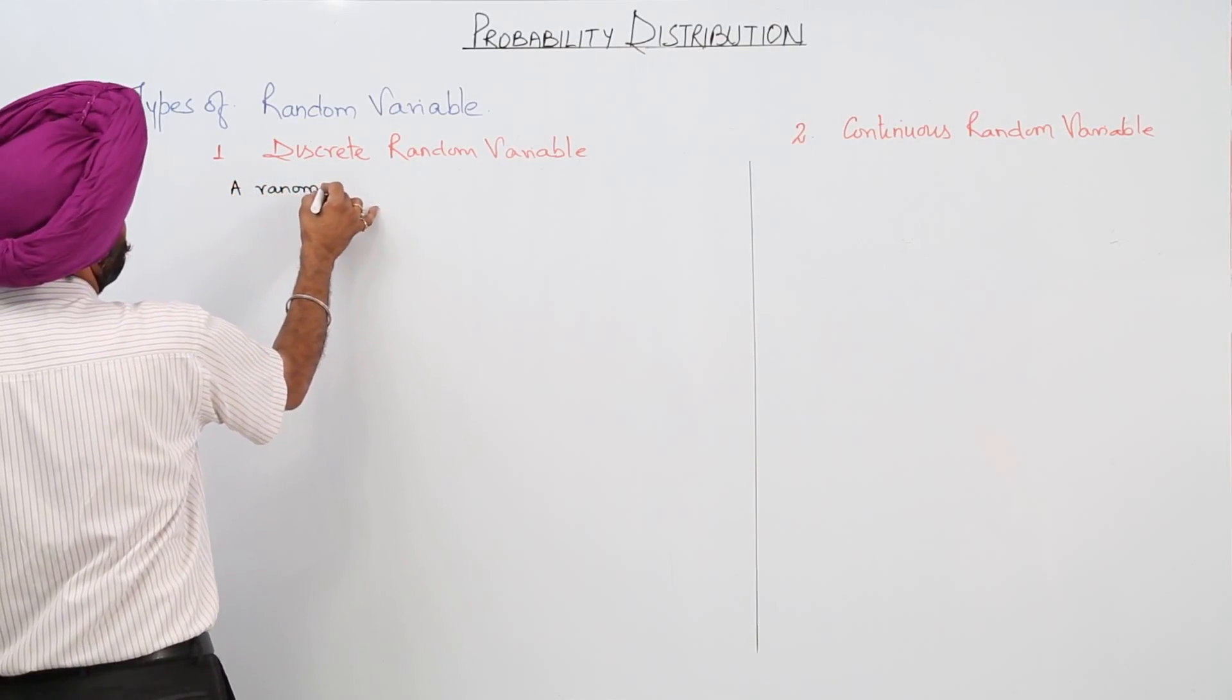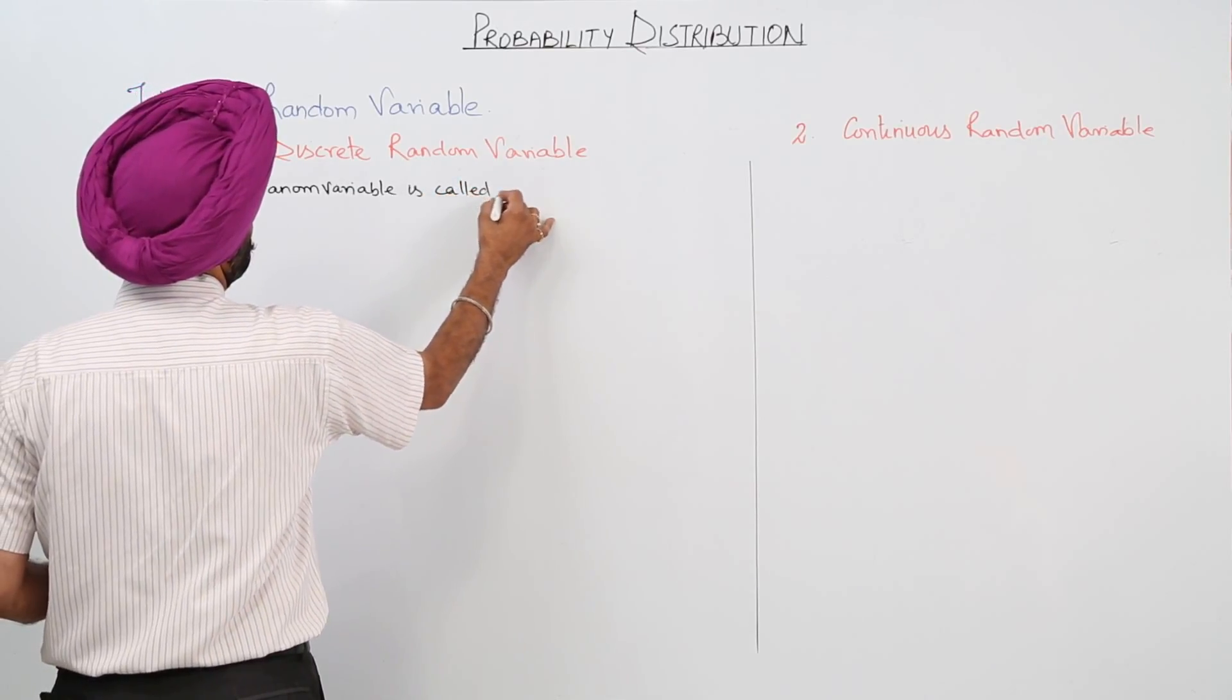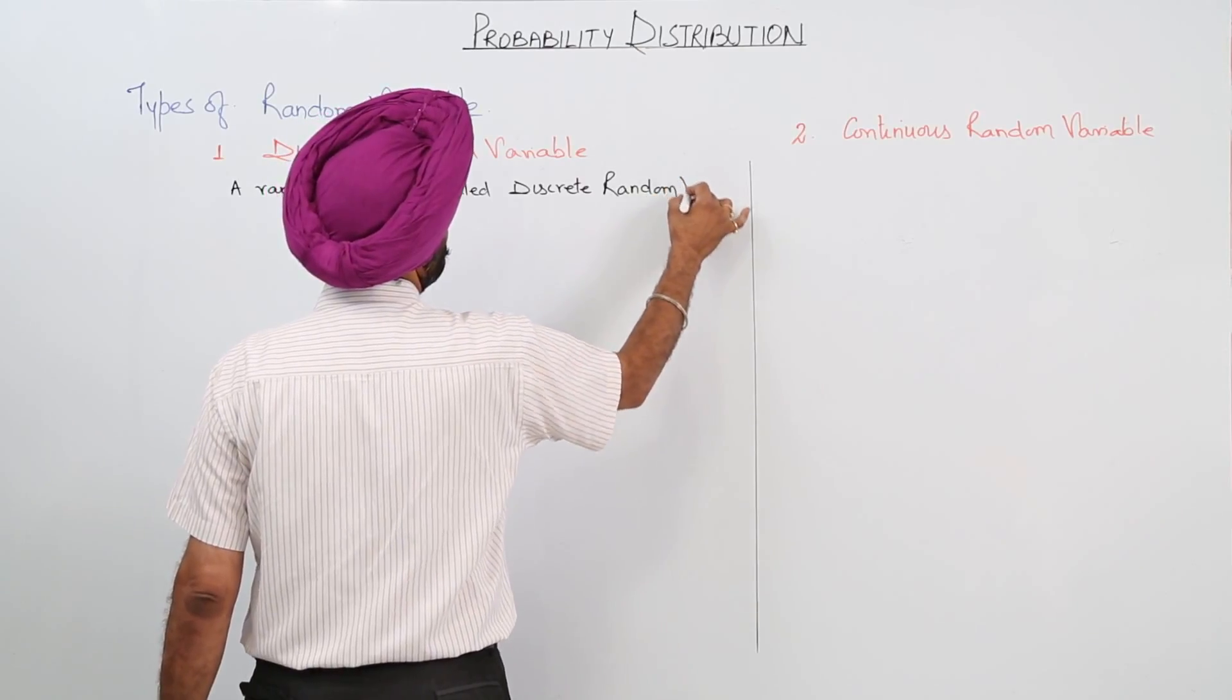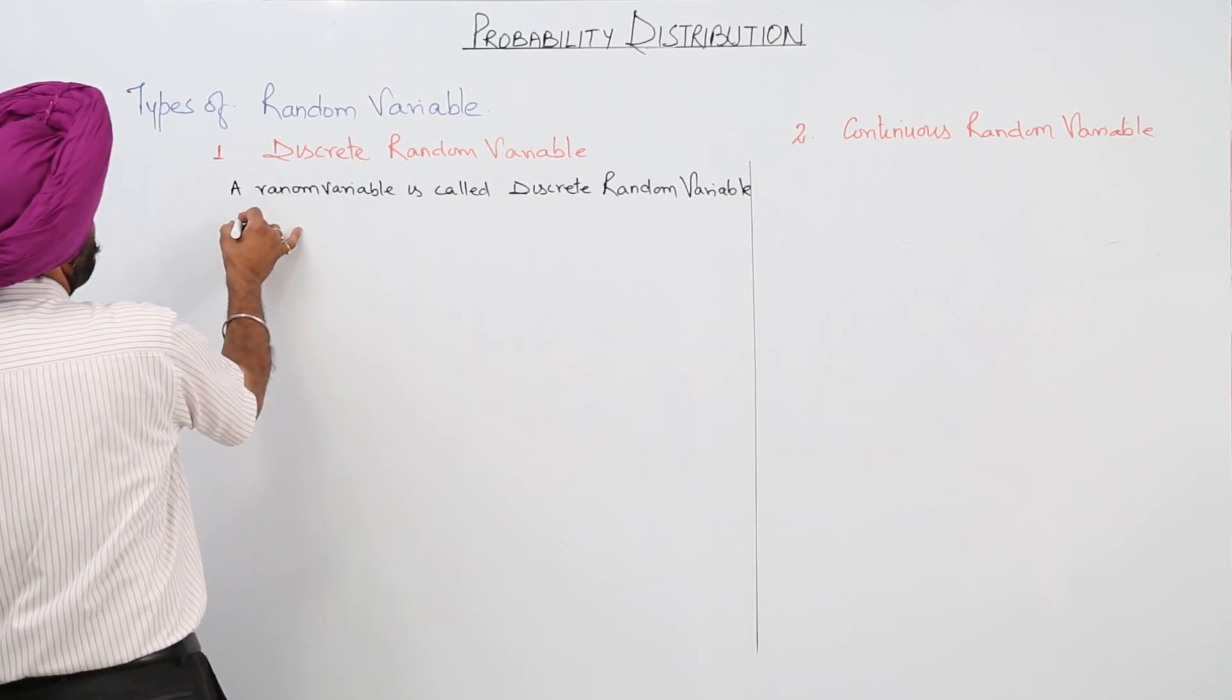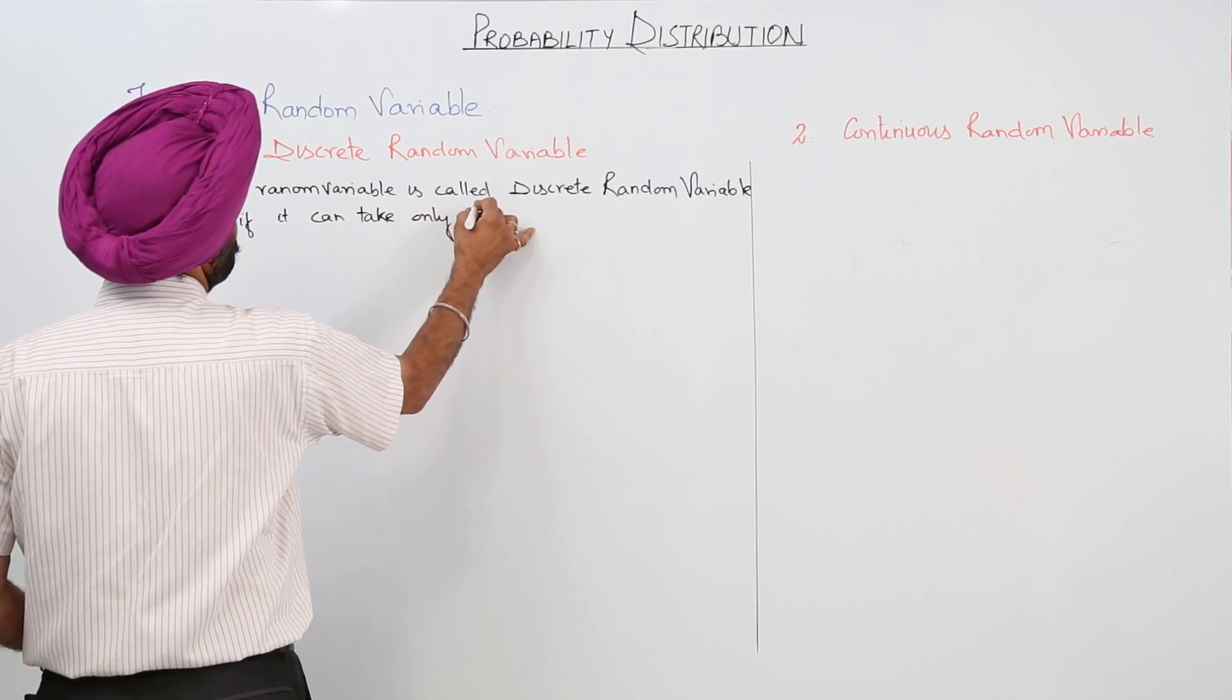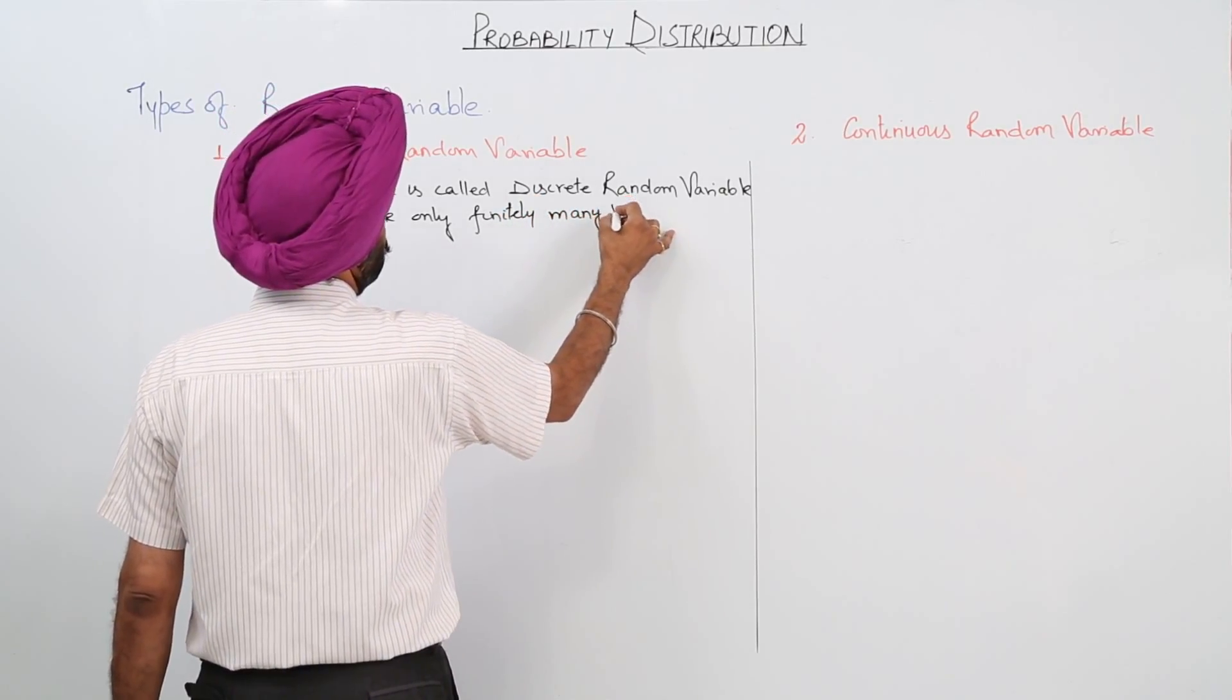A random variable is called a discrete random variable if it can take only finitely many values.